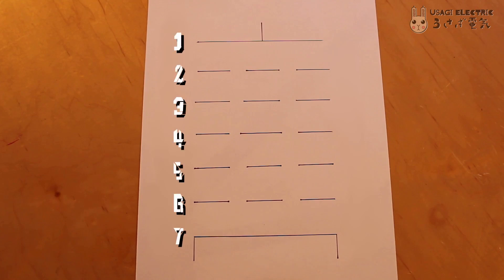The heptode or pentagrid converter features seven active elements inside. It's easiest to think of it as two pentodes that share a plate, cathode, and suppressor grid.